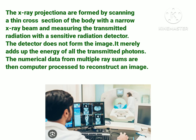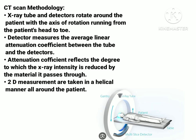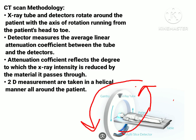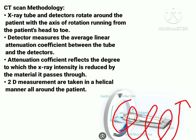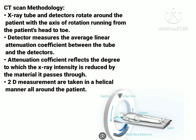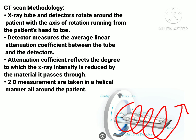In CT scan, the x-ray tube and detectors are in rotating motion when in function — they rotate around the patient, and the axis of rotation runs from the patient's head to toe. The alternation coefficient means the degree to which x-ray intensity is reduced by the material it passes through. The detectors measure the average linear alternation coefficient between the tube and detectors. In CT scan, 2D measurements are taken in a helical manner all around the patient by the detectors.